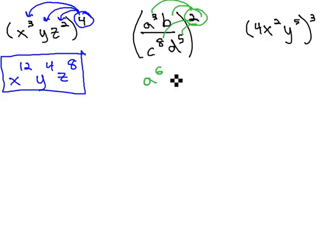Giving us a to the 6th, 3 times 2, b squared, over c to the 16th, 8 times 2, d to the 10th, 5 times 2.